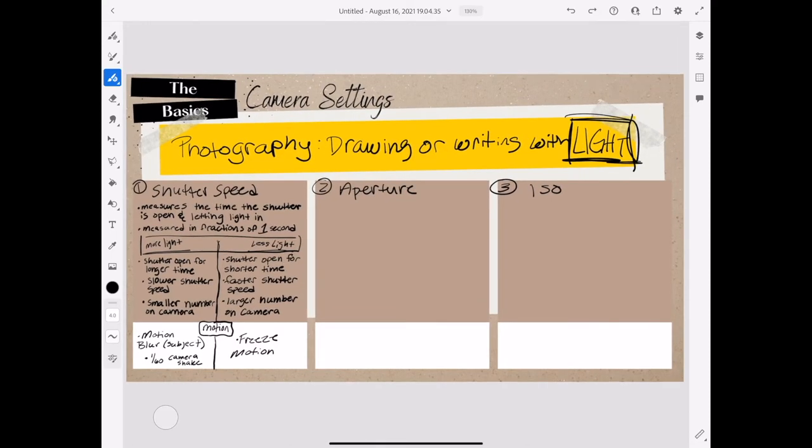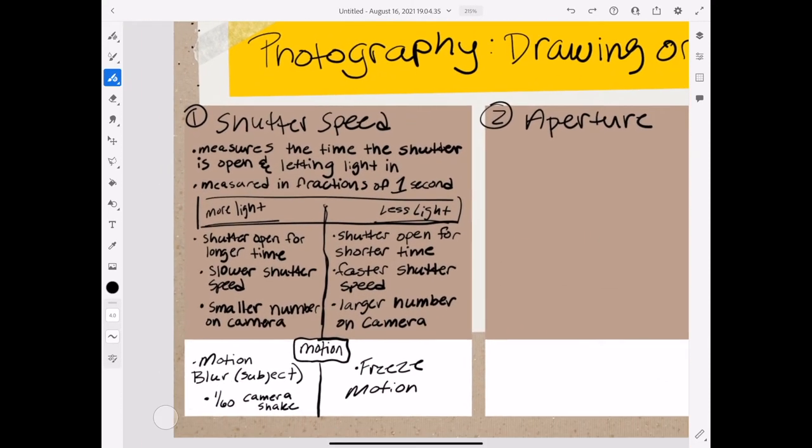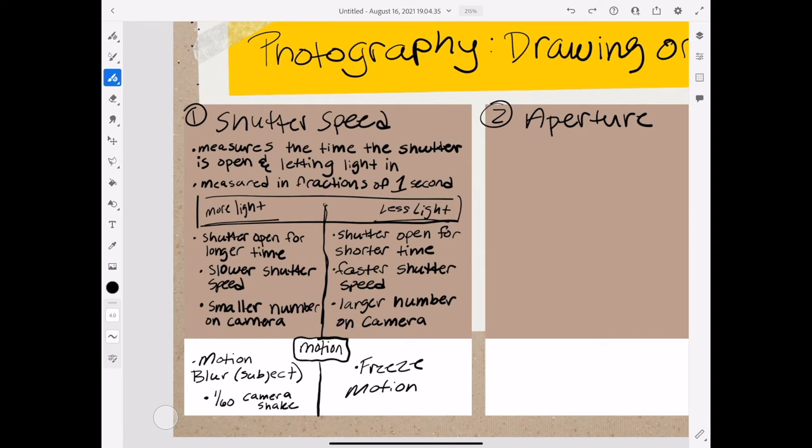We are back to the basics, going over camera settings. The last video went over shutter speed, which measures the time that the shutter is open and letting light in. It's measured in fractions of one second. You let more light in by leaving the shutter open longer, so it's a slower shutter speed and the number is smaller on your camera.